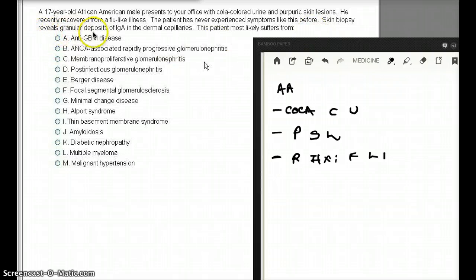Skin biopsy reveals granular deposits of IgA in the dermal capillaries. So now we have a biopsy, and there's IgA in dermal capillaries. The patient most likely suffers from.